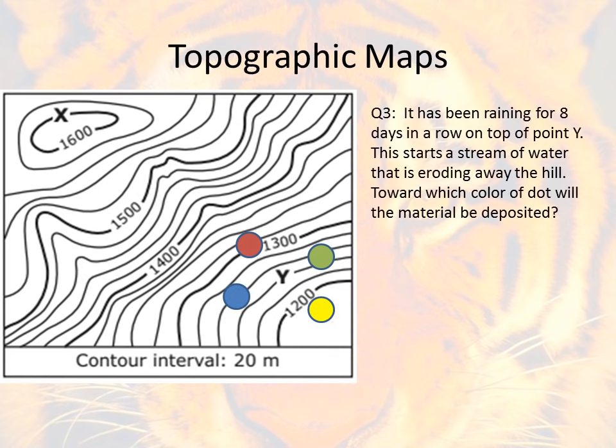For question three: it has been raining for eight days in a row on top of point Y. This starts a stream of water that is eroding away the hill. Towards which color of dot will the material be deposited? For your answer on this one, just mention the color that is correct.